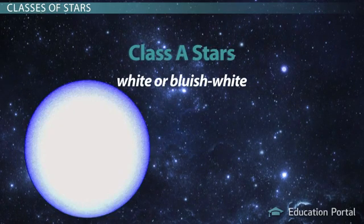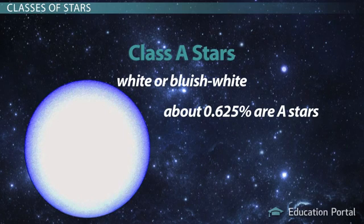Class A stars are white or bluish-white. About .625% of the stars in the sky are Class A.